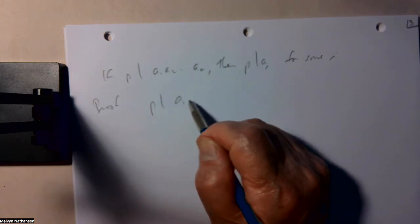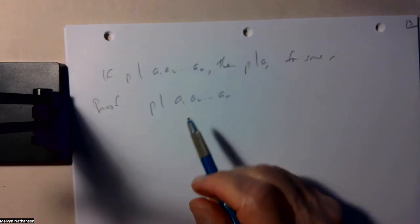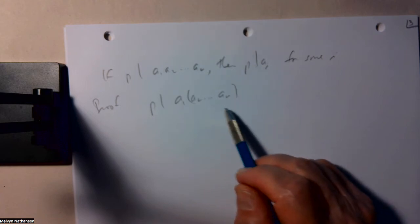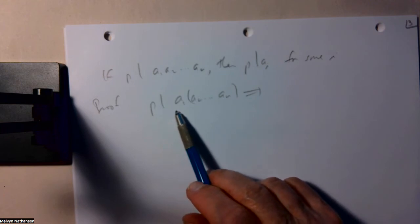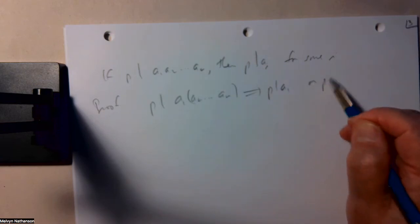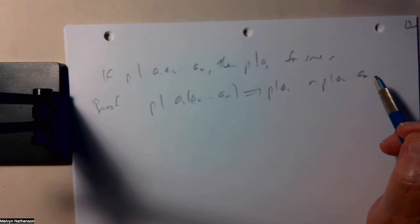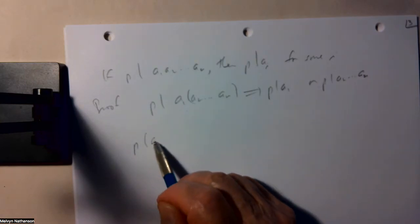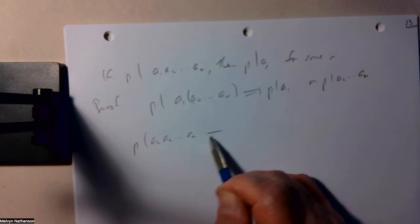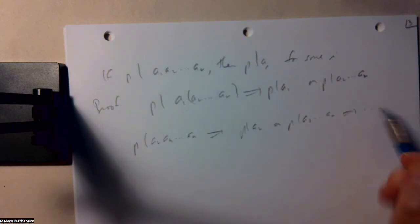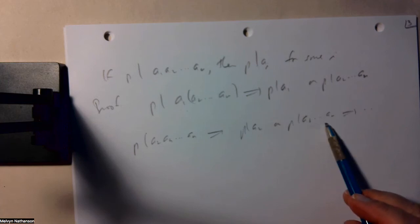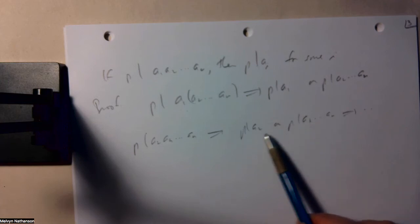The proof would go like this. p divides this product a1 a2 up to a_n. We can think of this as the product of a1 with a2 up to a_n. By the statement we just proved, if p divides the product of two numbers, either p divides the first, or p divides the second, which is a2 up to a_n. And if p divides a2 up to a_n, then p divides a2 or p divides a3 up to a_n. And continuing in this way, we see that this process has to stop, because at every step we have one fewer factor here. So at some point, we have an integer a_i with p divides a_i.